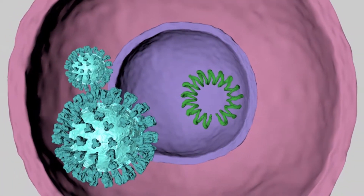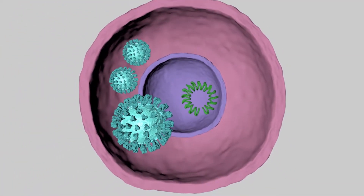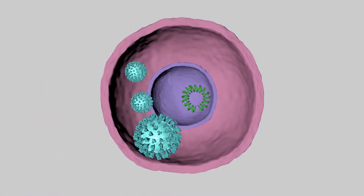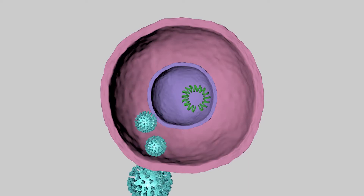Thereupon, the transformed cell divides. This occurs unceasingly as virions exit after cell lysis and piggyback the mRNA into more host cells in a lysogenic cycle.